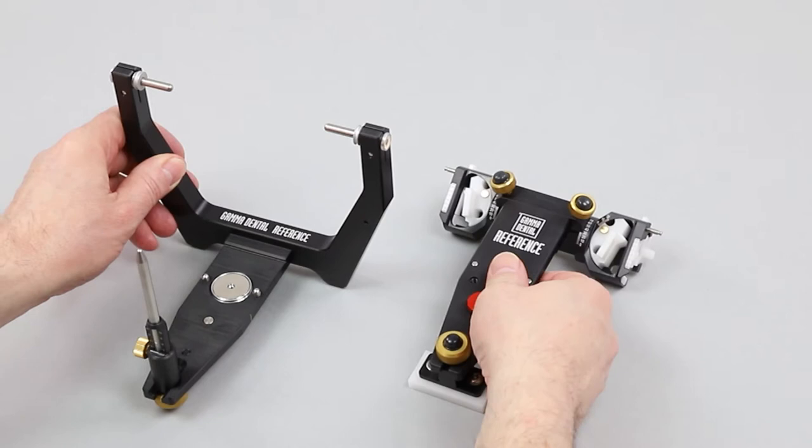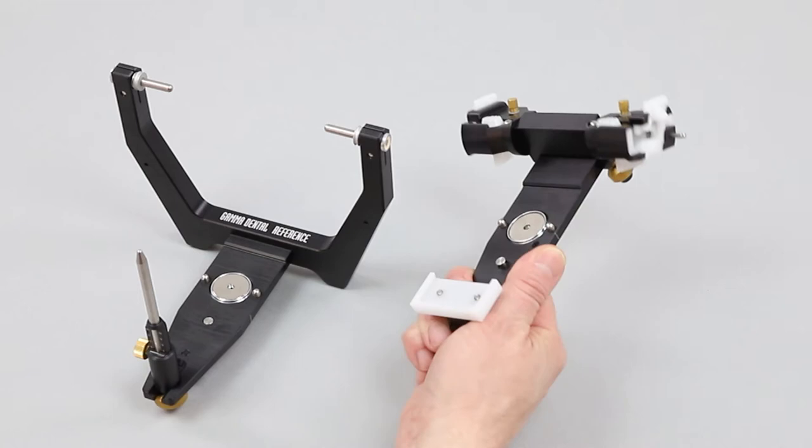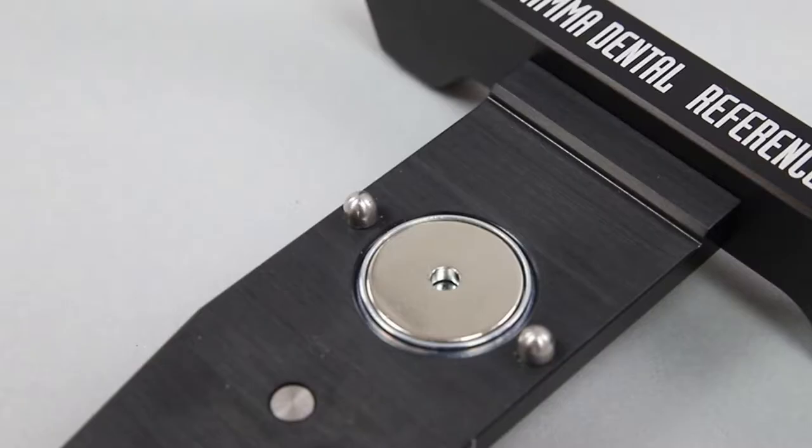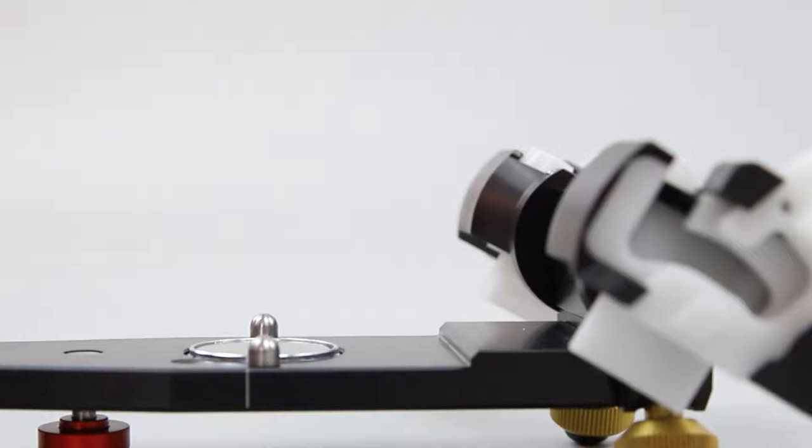Basically, the articulator consists of an upper and lower member. Both members of the articulator are equipped with a magnetic retention system for attaching the articulated casts.